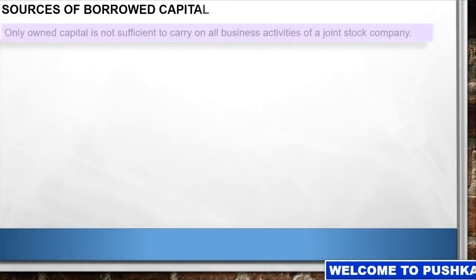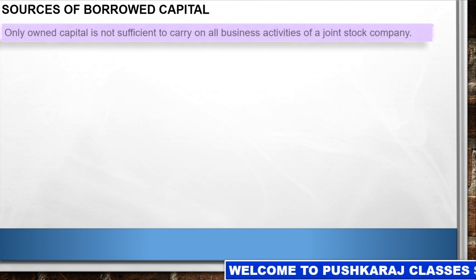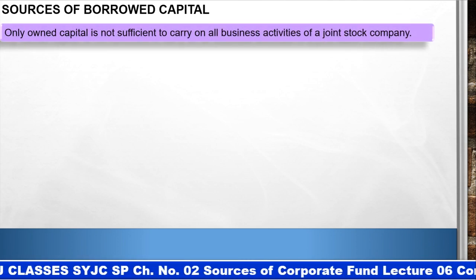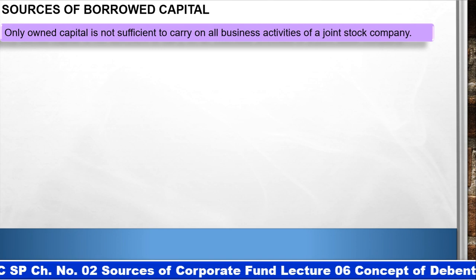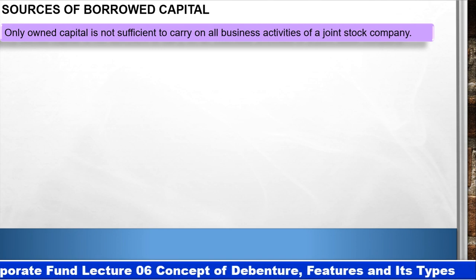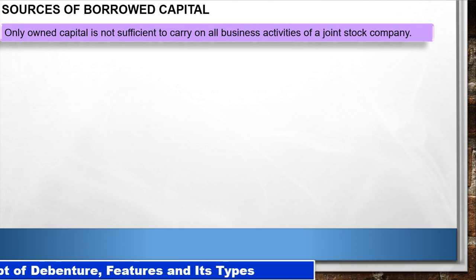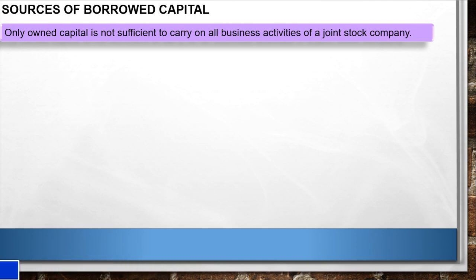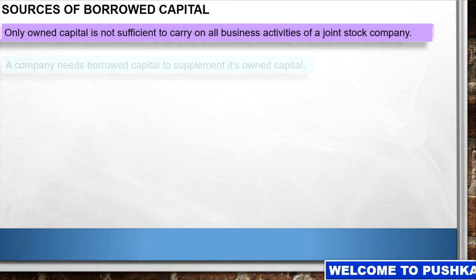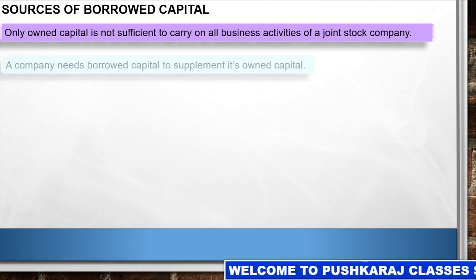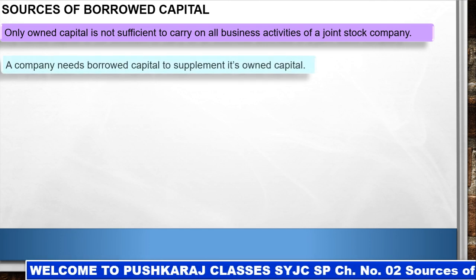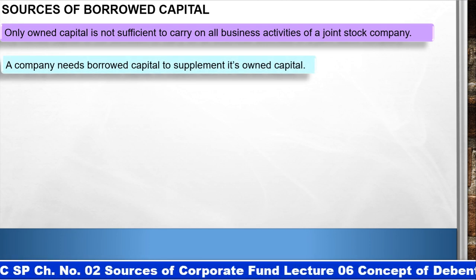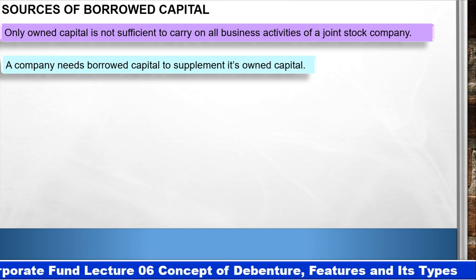Sources of Borrowed Capital. Only owned capital is not sufficient to carry on all business activities of a joint stock company. A company needs borrowed capital to supplement its owned capital. Company के सारे business activities के लिए owned capital sufficient नहीं होता है, owned capital के साथ supplement तरीके से borrowed capital की जरूरत होती है.